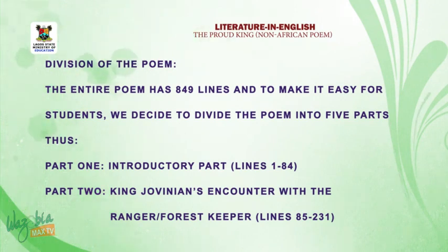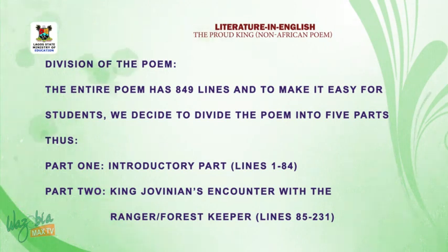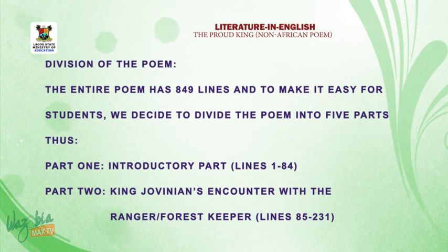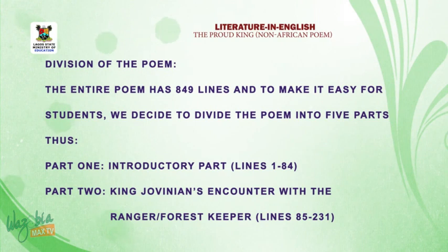Part two of the poem covers lines 85 to 231. King Jovnian, in his nakedness, believed that the ranger was his best friend who would give him befitting hospitality. He went to the ranger's house and introduced himself as the ruling king. When the ranger heard this, he bundled him out of his house immediately.